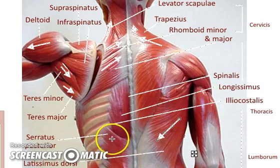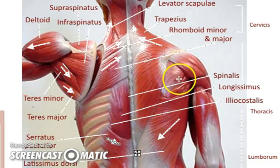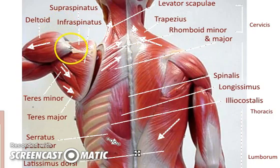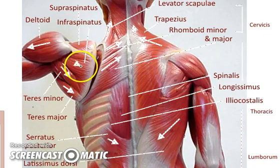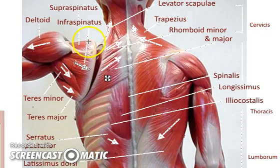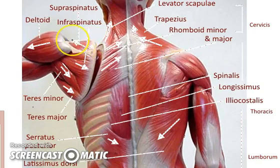Serratus posterior does a little twisting of the trunk and helps with breathing. Infraspinatus — I like that word because infra means below the spine of the scapula — is going to help also a little bit with adduction towards the middle. And the supraspinatus, meaning above the spine, is part of the rotator cuff, so it's going to do a little rotation of the shoulder.